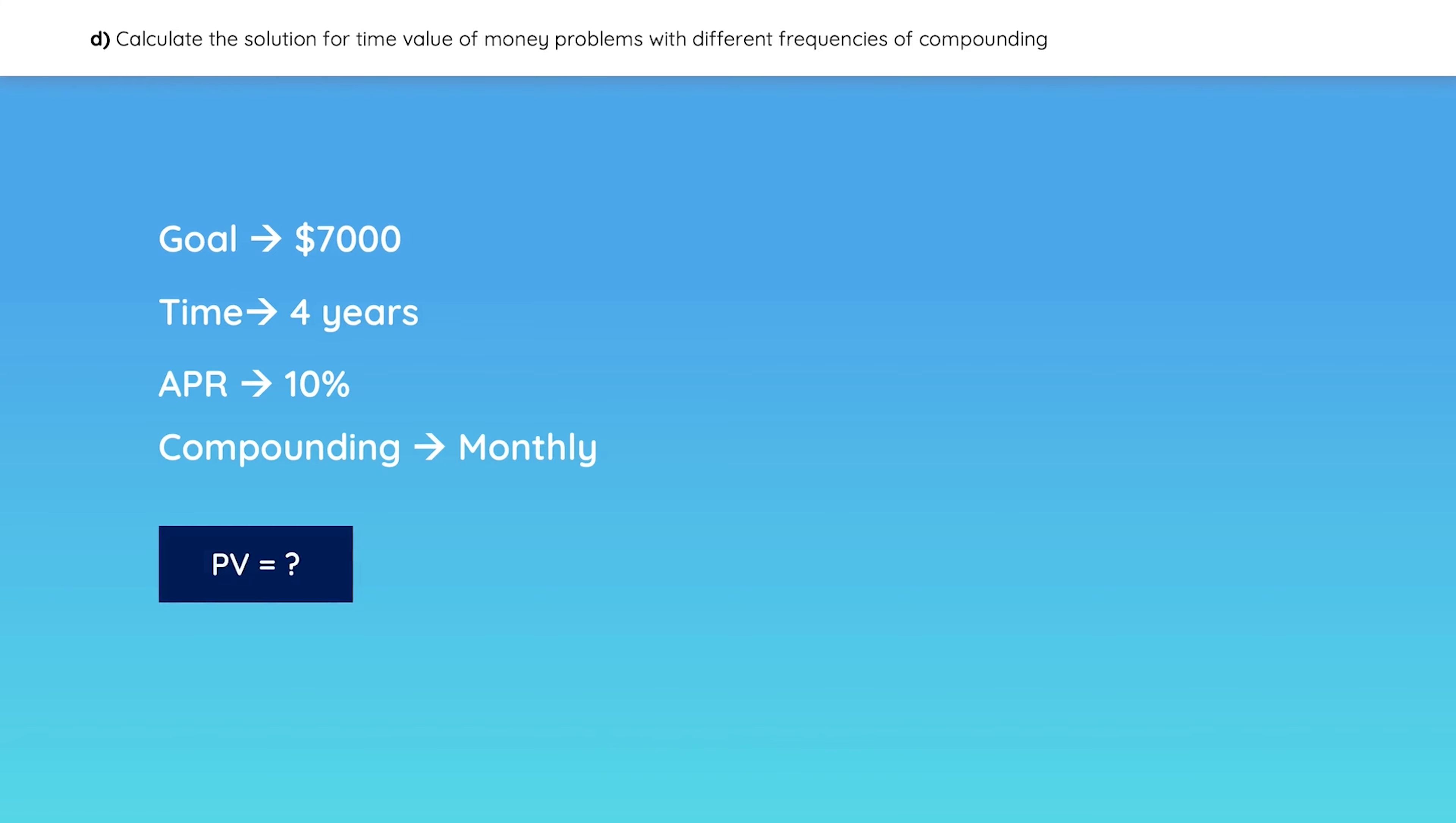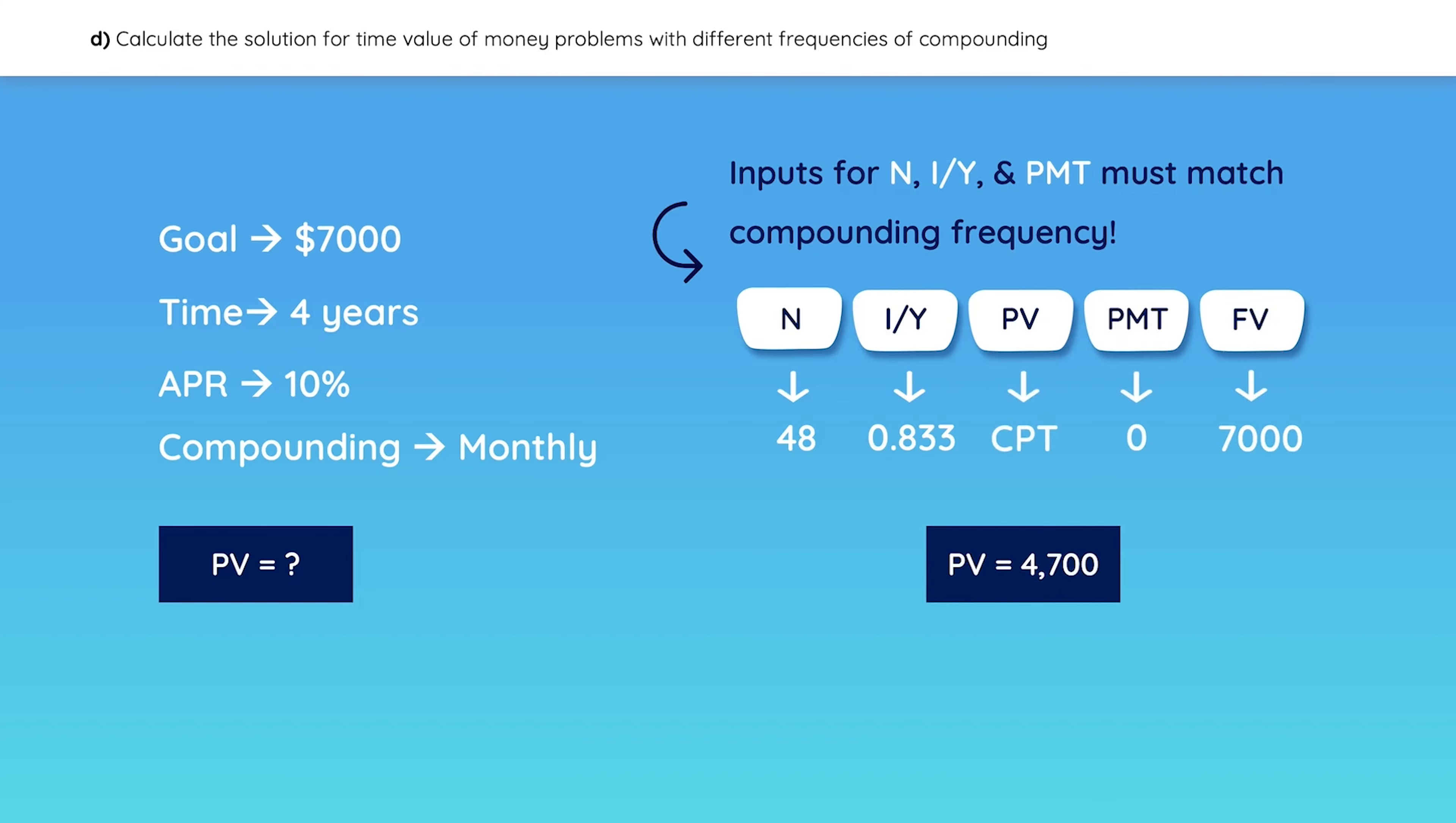They are essentially asking for the present value. First things first, remember that we are compounding monthly, so you must enter monthly values in your calculator. This is a common mistake, so don't fall for it. N would be 48 months. The interest rate should be monthly as well. There are no in-between payments, and future value is $7,000. Then you just compute the present value.